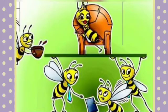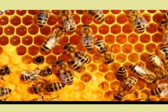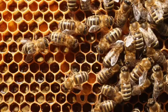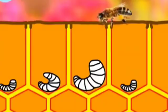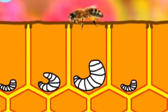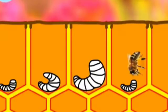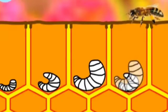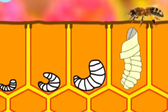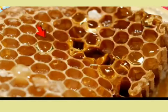No worker bee shirks their work. At the age of 1 to 5 days, they do cleaning and polishing of cells of the hive. Similarly, at the age of 6 to 12 days, their work is eating pollen and feeding the brood — older brood first, then younger larvae.